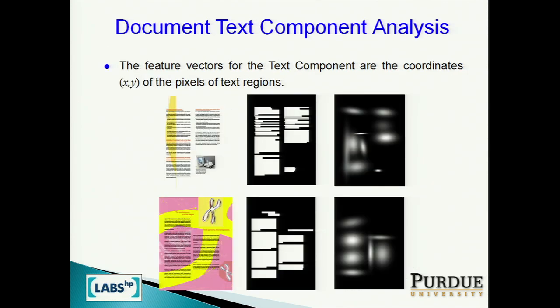For the text component, we do a similar algorithm and extract a Gaussian mixture model. In this case, we only consider pixels of text boxes — we take the xy coordinates of pixels at every text box and disregard everything else. Since these are two-dimensional, we can show them on the screen. This is the representation of the Gaussian mixture model for the text component.